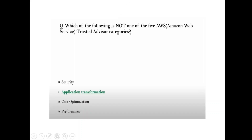Question: Which is not one of the five AWS Trusted Advisor categories? Security, cost optimization, and performance all are Trusted Advisor categories. The five categories are as shown earlier. The incorrect option would be something like 'application transformation.'